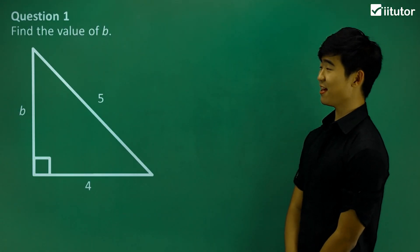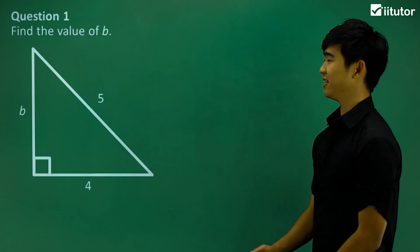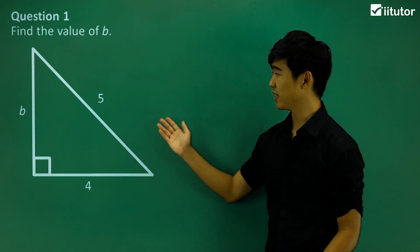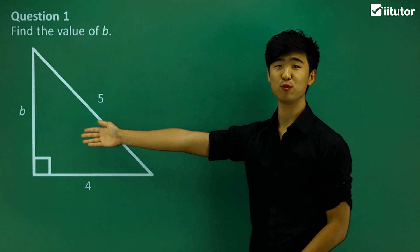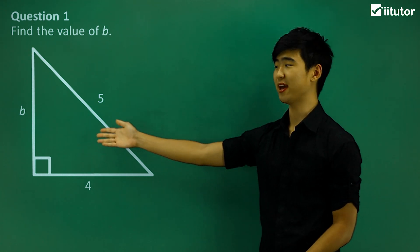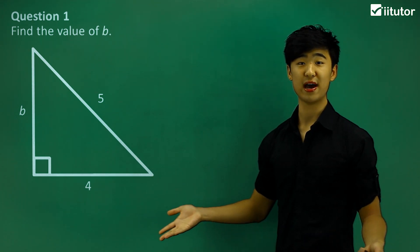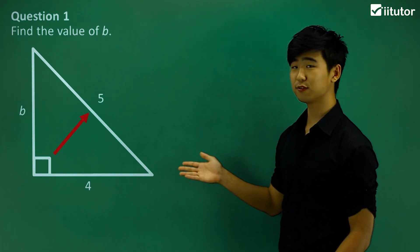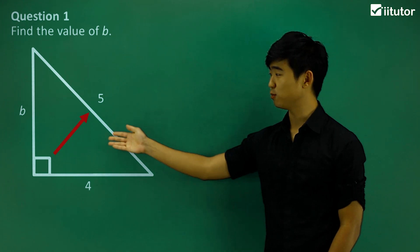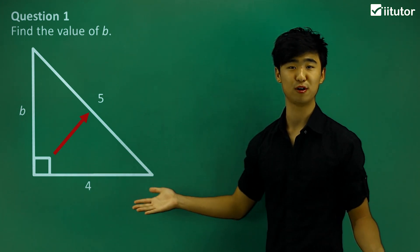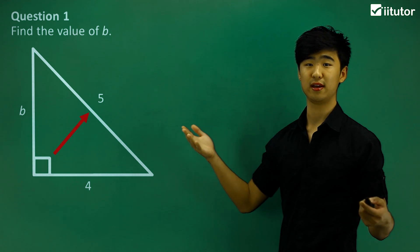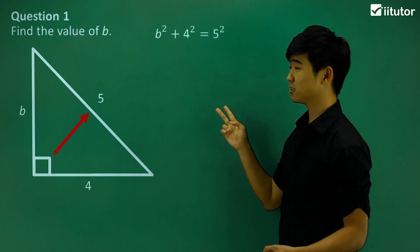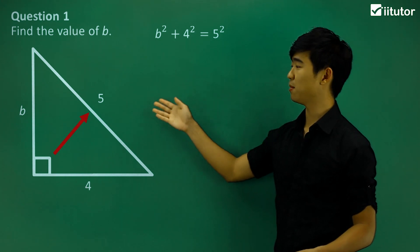Question number one: find the value of b. We're given a right-angled triangle with an unknown side which happens to be the shorter one. We can apply the Pythagoras theorem. The side 5 is opposite the right angle, so it is the hypotenuse. The theorem states that the two shorter sides squared added together equals the hypotenuse squared.